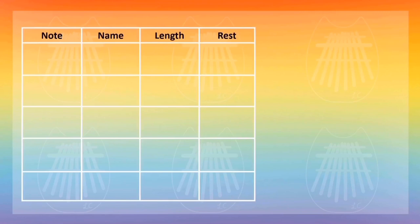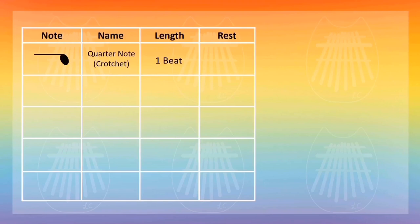Let's start with some of the common notes that you would see in kalimba tabs. This one looks like a grape with a stem on it. This is a quarter note. The length of this note is one beat. When you see a rest note, that means you don't play the length of that beat. For a quarter note rest, it looks like a squeaky line.